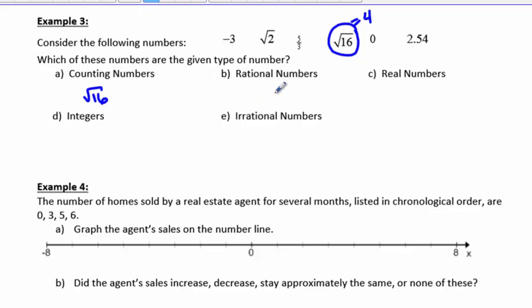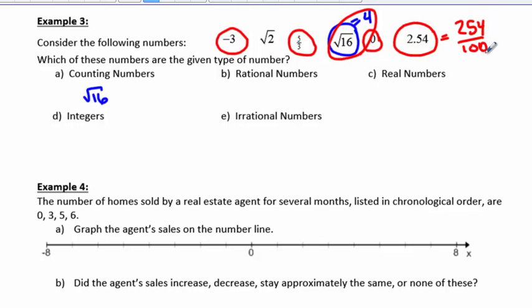Rational numbers. Rational numbers include those numbers that are counting numbers, those numbers that are whole numbers, and those numbers that are fractions. Negative integers are also counted as rationals. And numbers that can be written as fractions but are currently written as decimals, such as this one would be 254 hundredths, all count as rationals. So these five numbers right here are rational.